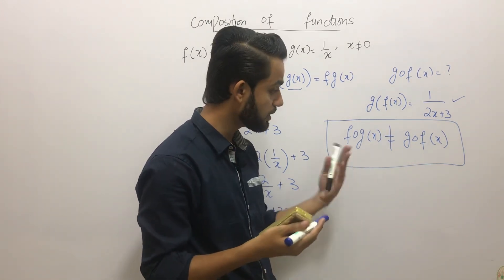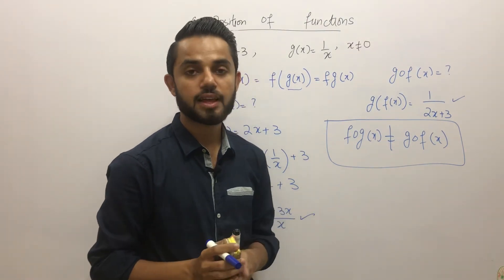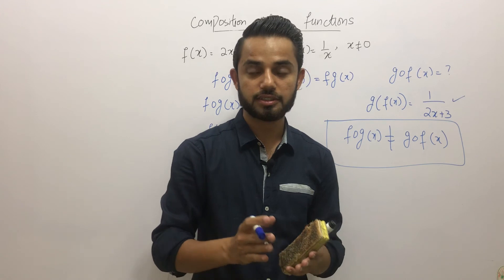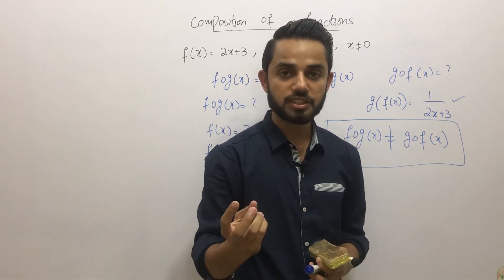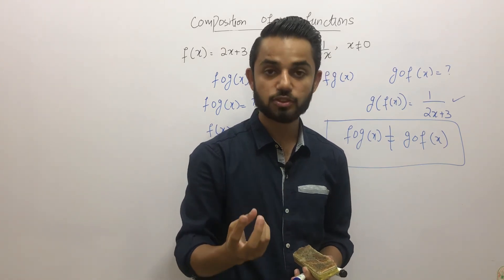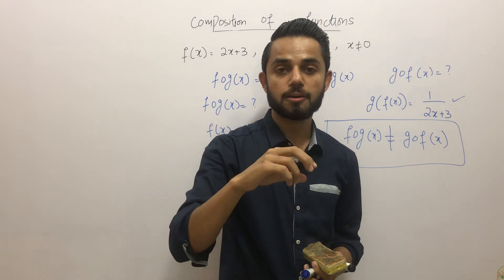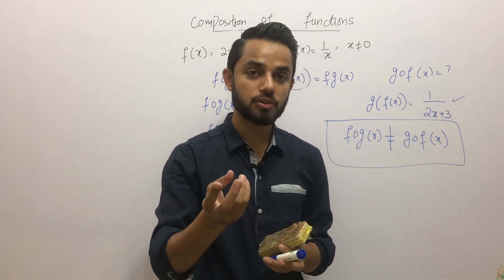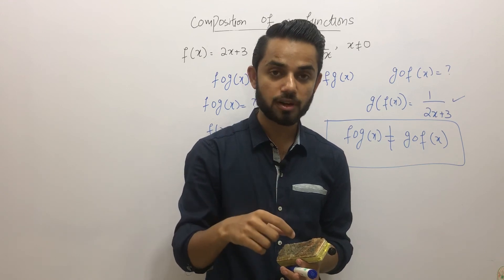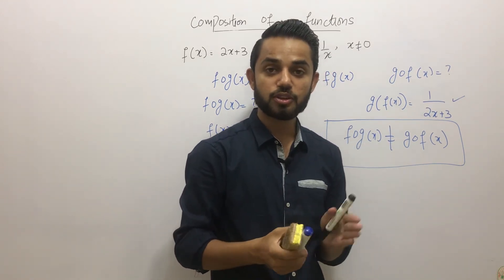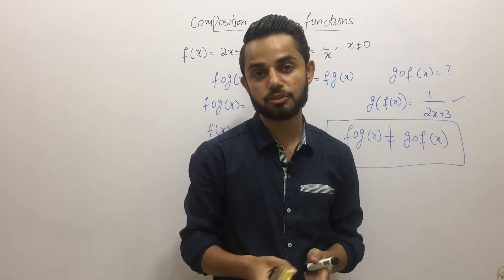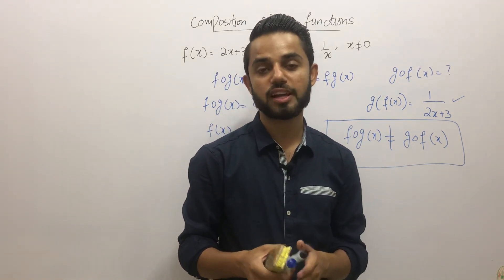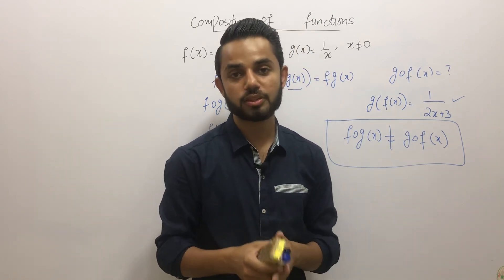To illustrate why composition is not commutative, think of an industrial plant that produces mango juice bottles. The first operation is to fill the bottle with juice; the second is to put a cap on it. If you put the cap on first, you can't fill the bottle — so the order matters. Composition of functions is exactly like this. Please subscribe and share this video so your friends can benefit too.